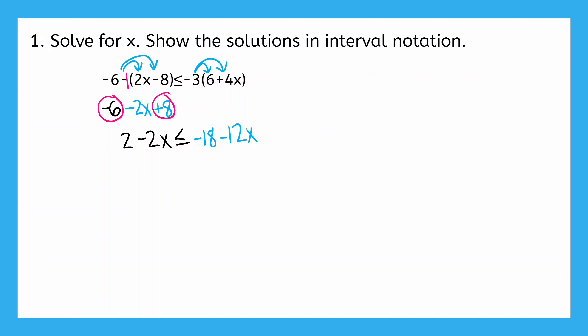Since I have variables on both sides of my inequality, I need to cancel one of those terms to bring them together. It doesn't matter whether I choose to cancel the negative 2x on the left or the negative 12x on the right, because both will work. But in this method, I'm going to cancel the negative 2x. Since this is a negative 2x, I'm going to need to add 2x to both sides. Negative 2x plus 2x cancels, leaving just 2 on the left. On the right, negative 12x plus 2x makes negative 10x, and I'll bring down my negative 18.